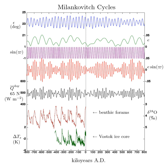The Earth's orbit approximates an ellipse. Eccentricity measures the departure of this ellipse from circularity. The shape of the Earth's orbit varies between nearly circular with the lowest eccentricity of 0.000055 and mildly elliptical; its geometric or logarithmic mean is 0.0019. The major component of these variations occurs with a period of 413,000 years, with eccentricity variation of ±0.012. Other components have 95,000-year and 125,000-year cycles with a beat period of 400,000 years. They loosely combine into a 100,000-year cycle. The present eccentricity is 0.017 and decreasing.